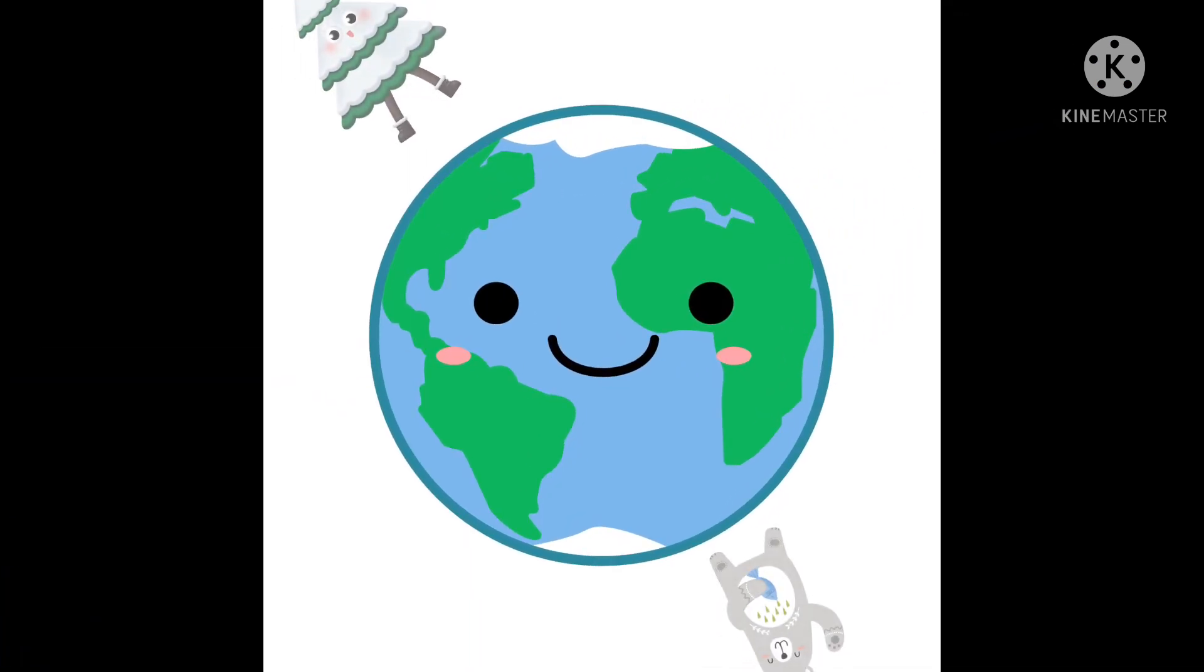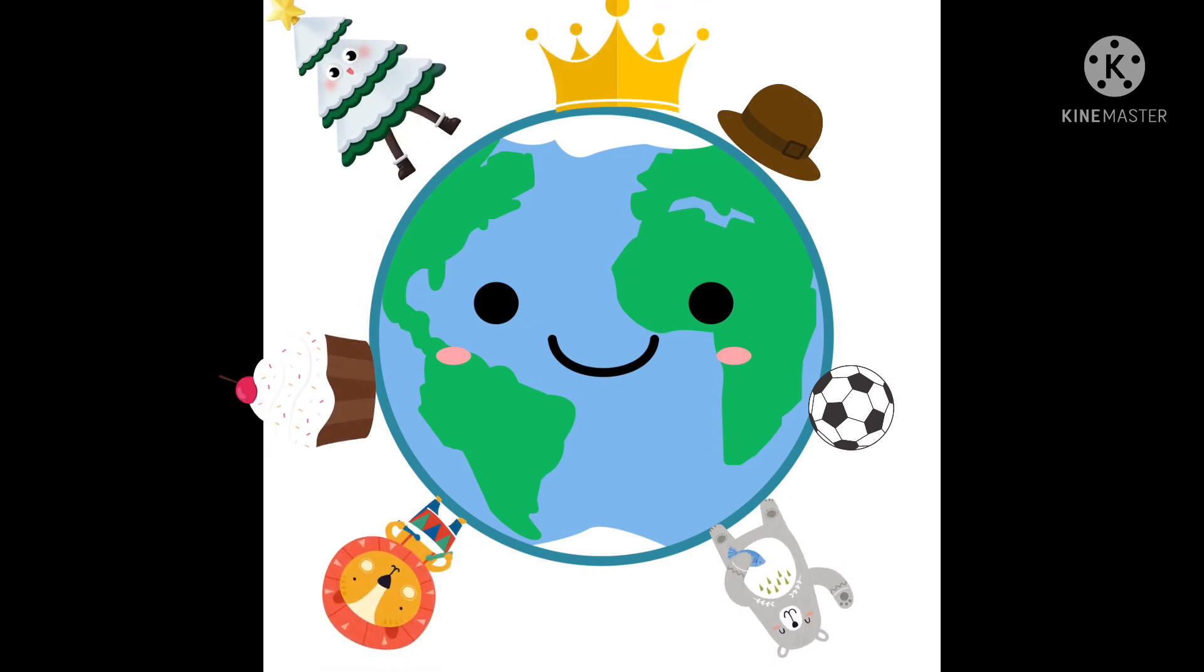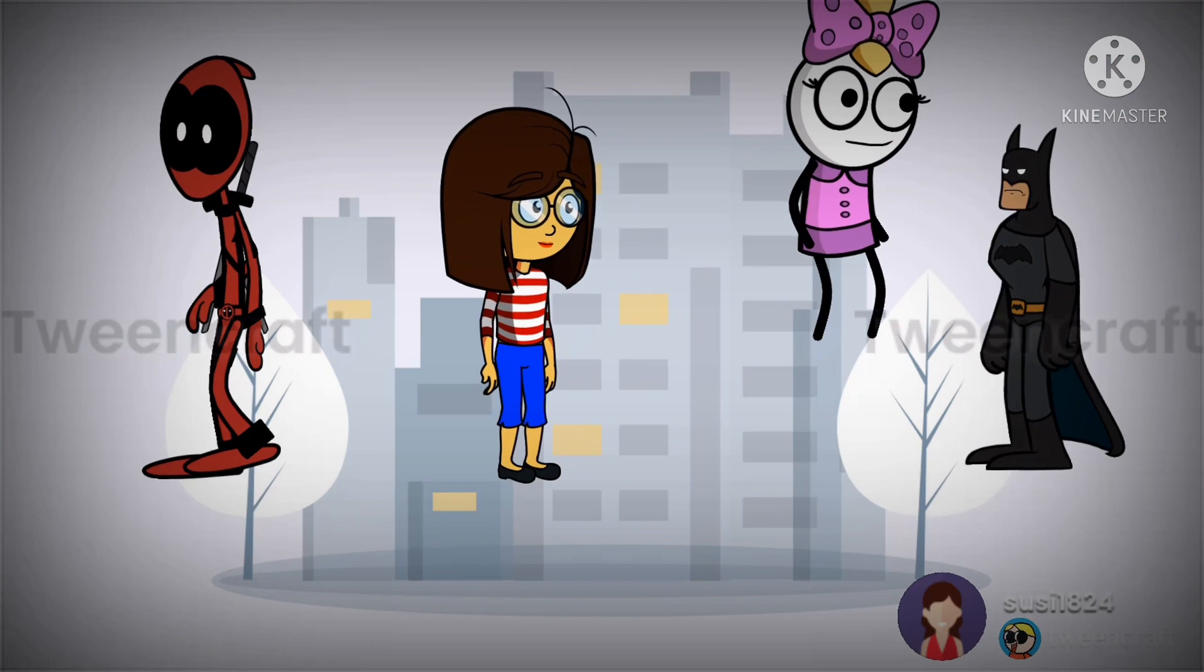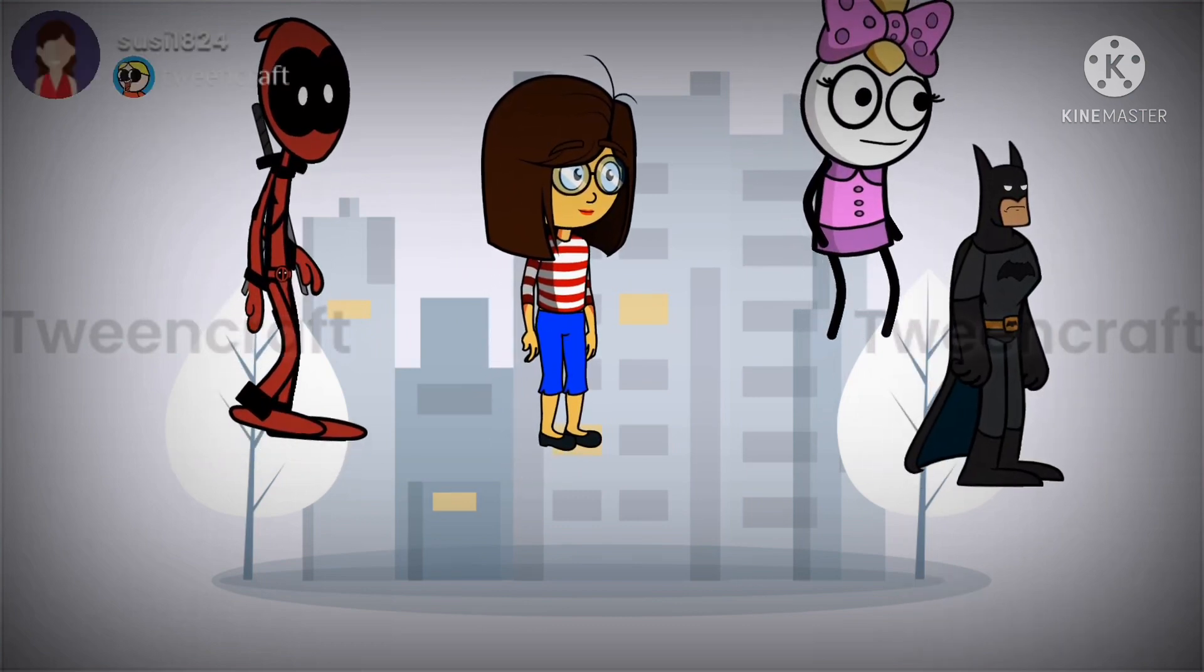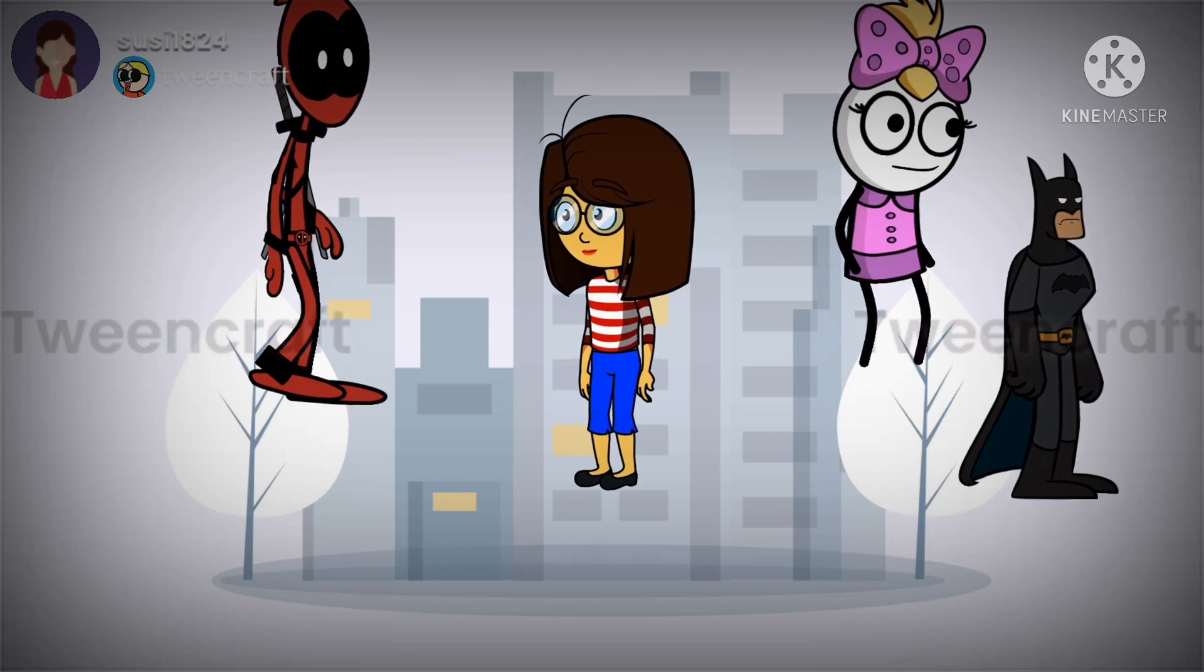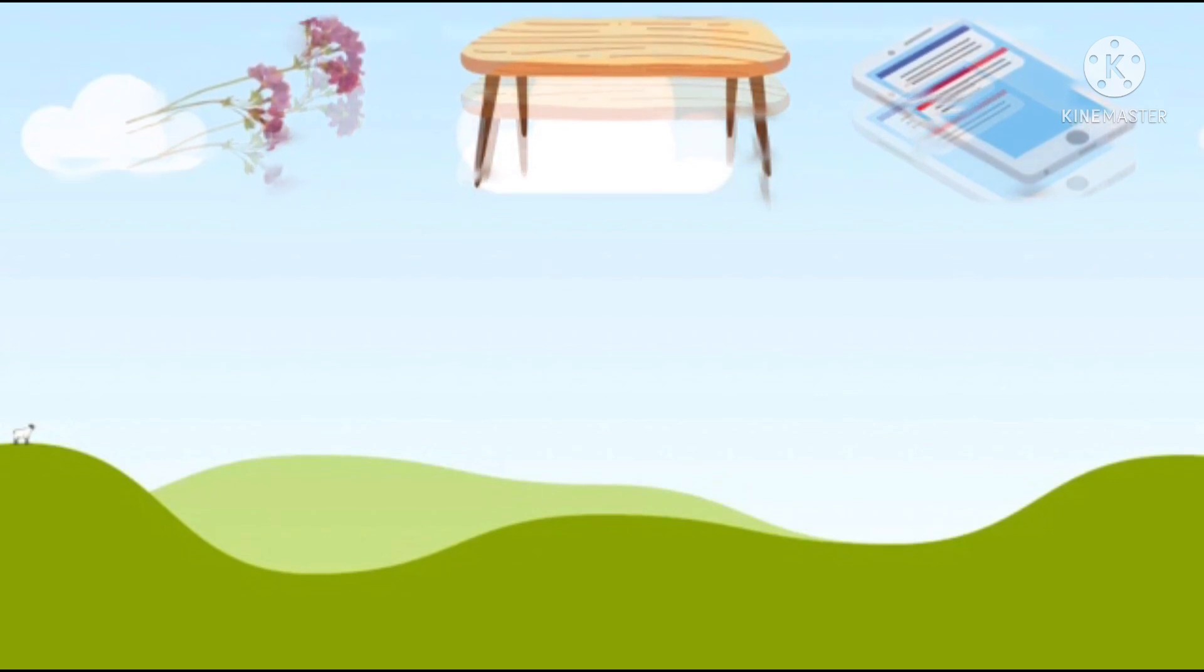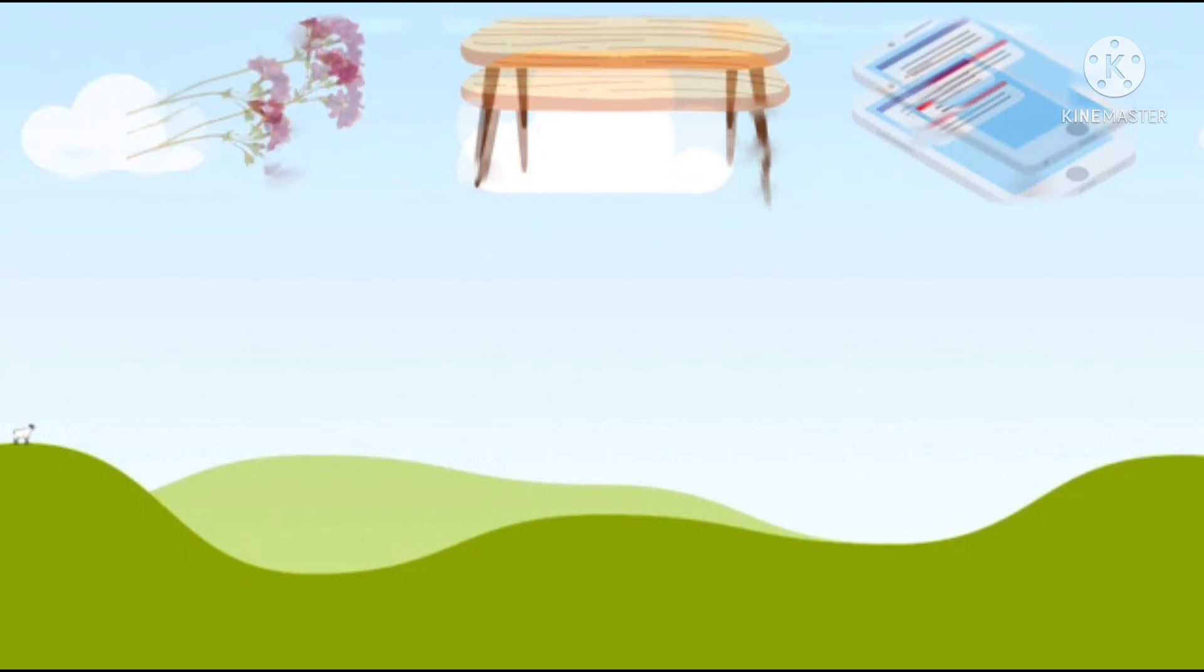Here, the objects are attracted towards Earth. That attraction is called gravity. If there is no gravity, we cannot stand on the Earth. Everyone will be floating here and there. Not only us, even the things which we drop will not reach the ground. They will also float.